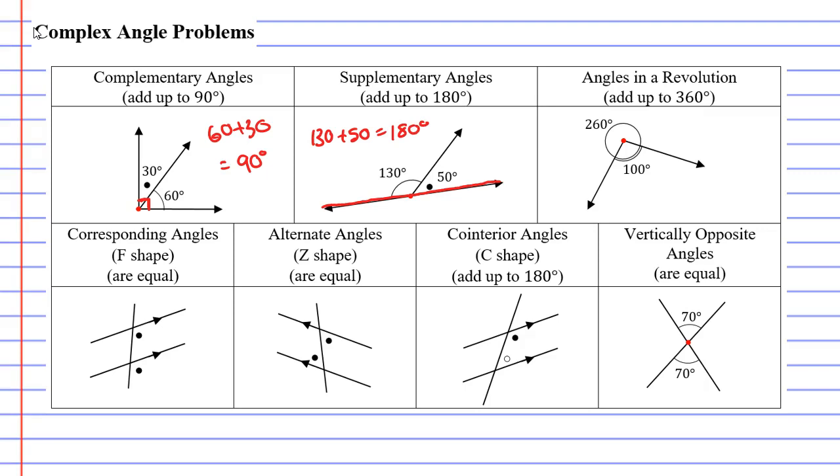Next we have angles in a revolution. You'll notice when I put all the angles together they make a complete revolution, which means that if I add them up they will equal 360 degrees.